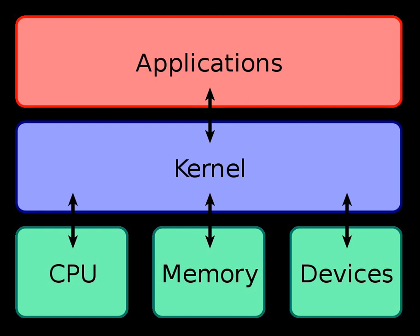Modern monolithic kernels, such as those of Linux and FreeBSD, feature the ability to load modules at runtime, thereby allowing easy extension of the kernel's capabilities as required, while helping to minimize the amount of code running in kernel space. Since there is less software involved, it is faster. As it is one single piece of software, it should be smaller in both source and compiled forms. Less code generally means fewer bugs, which can translate to fewer security problems. Most work in the monolithic kernel is done via system calls.